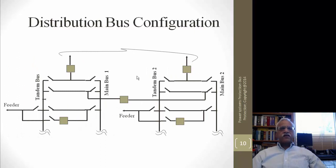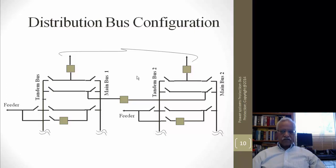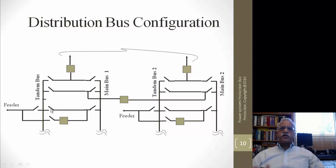Distribution bus configurations are a little different. There is a main bus and a tandem bus arrangement; the intent is to connect the load back to the source and serve the load. There are many switches, and under normal conditions all switches connected to the main bus are closed. Under problems with a breaker, you can close the switch on the tandem bus and pick up the load through a second breaker on the feeders.